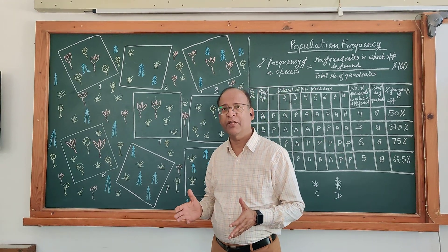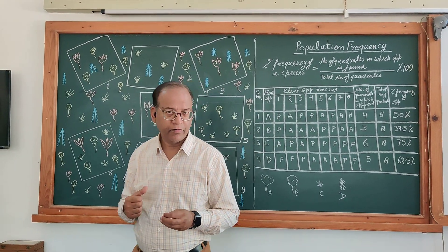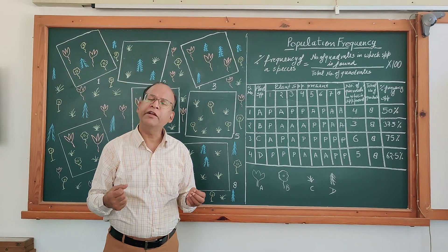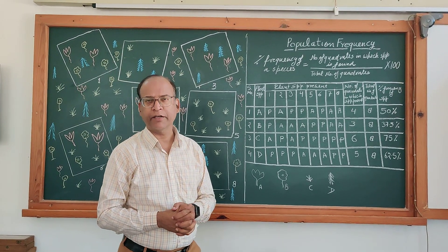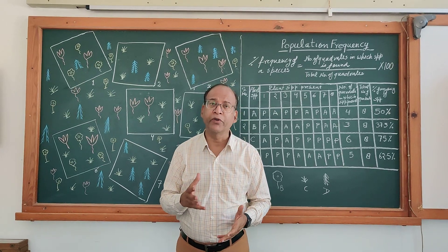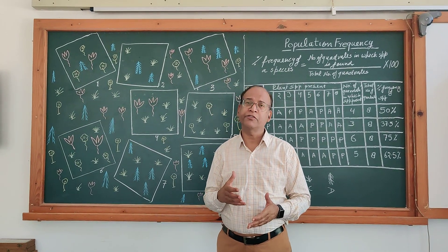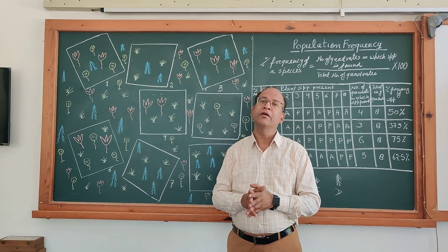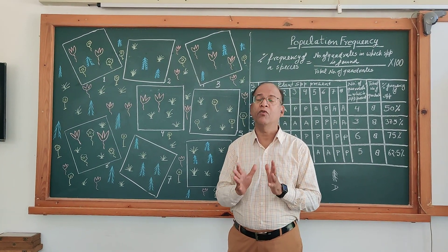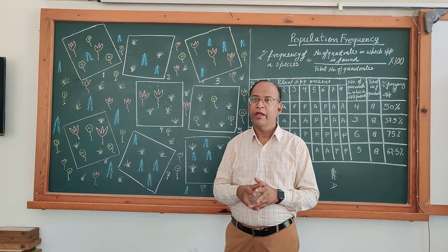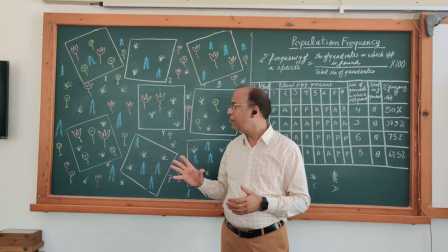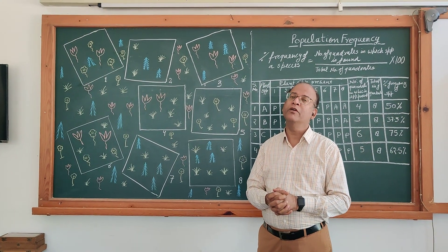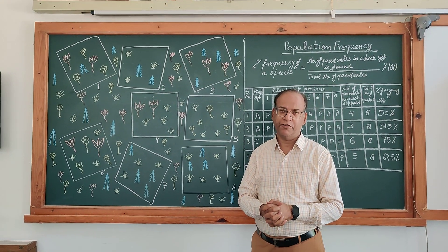This population frequency, or distribution of species in a community, depends on many factors. It depends on natality, mortality, migration, nature of soil — specifically for population frequency of plants — and also on grazing of that species.